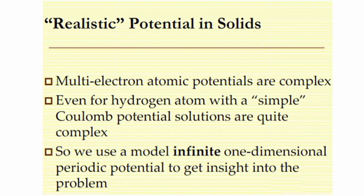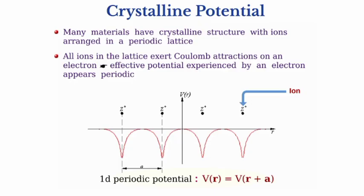So we use a model of a finite one-dimensional periodic potential to get insight into the problem. Let us consider an electron in the atomic nucleus of charge Ze — many materials have crystalline structure with ions arranged in a periodic potential. The atoms or ions in the crystal are arranged in a periodic manner, and all ions in the lattice exert Coulomb attractions on an electron. So the effective potential experienced by an electron appears periodic.